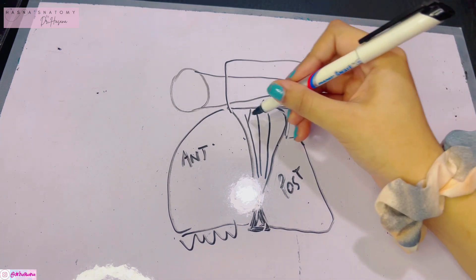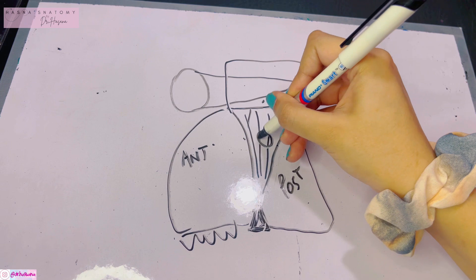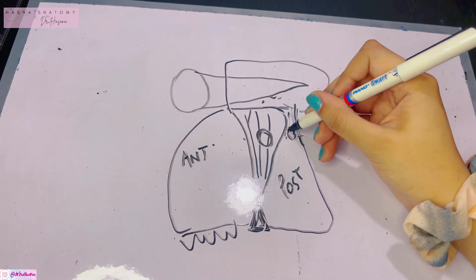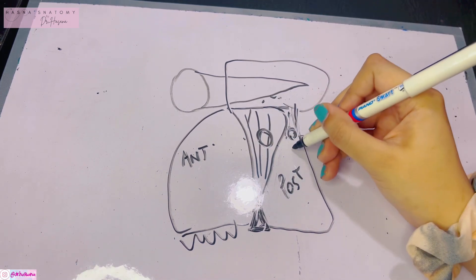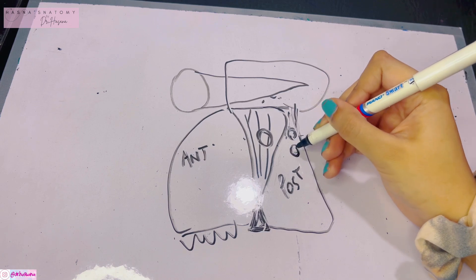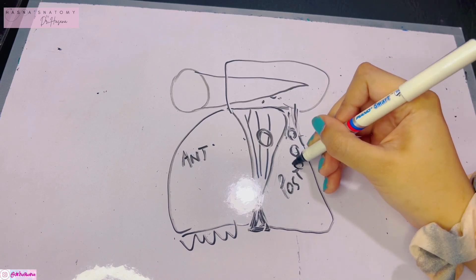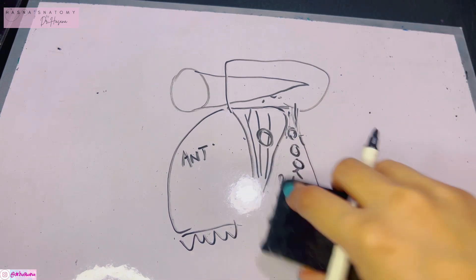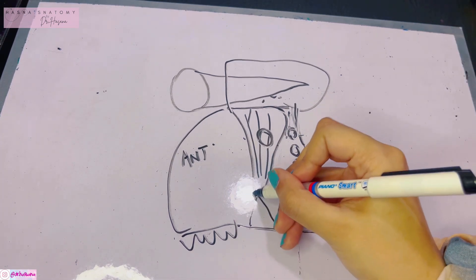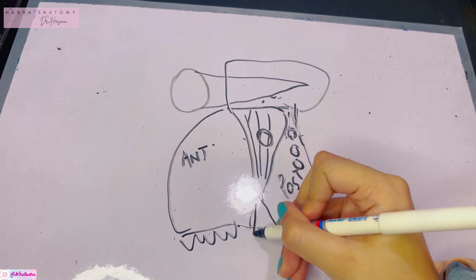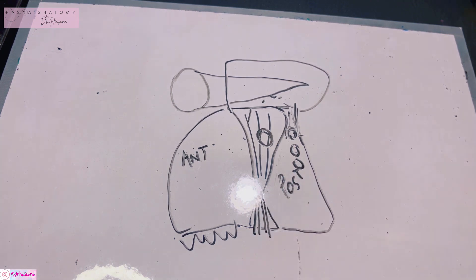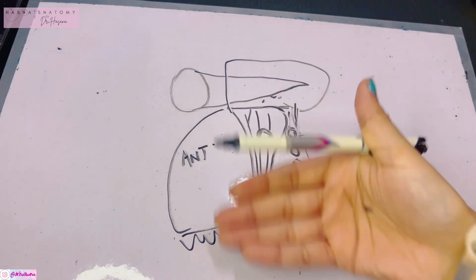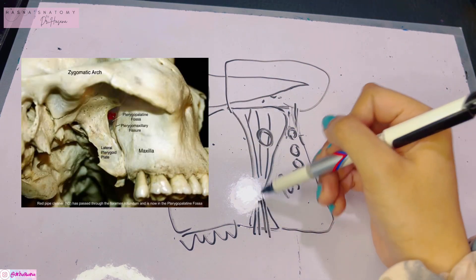Remember in the palatine bone there is a foramen called the sphenopalatine foramen. In the posterior wall you'll find the foramen rotundum, then the pterygoid canal, and finally the pharyngeal canal. In the pyramidal process that closes the inferior angle, you'll see the greater and lesser palatine canals.